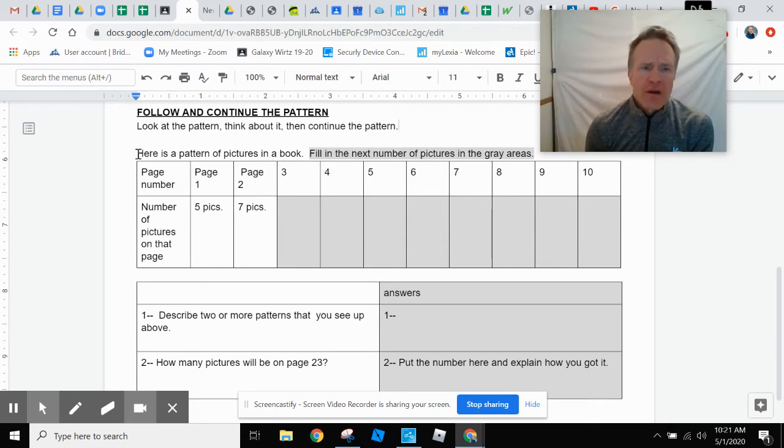So we are looking at a problem here. Here is a pattern of pictures in a book. On page one, there are five pictures. Page two, there are seven pictures.